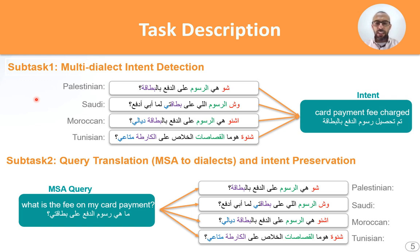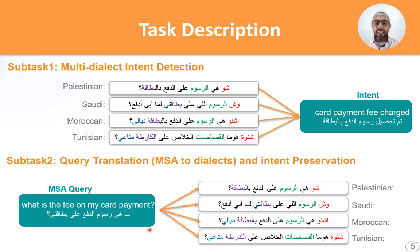In the second figure at the bottom, we can see that the input is the MSA query 'maa hiya rsoum al-daf'a al-baataqaati,' and the participant should translate it into the other four dialects covered in the shared task, which are Palestinian, Saudi, Moroccan, and Tunisian. It is very complicated to translate each word across different dialects.